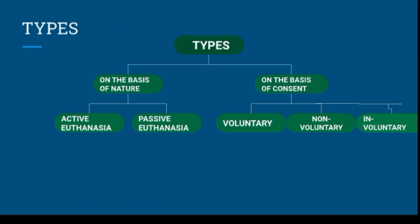Talking about classification on the basis of consent, euthanasia can be classified into three categories: voluntary, involuntary, and non-voluntary. In voluntary euthanasia, the person who is killed has requested to be killed. In non-voluntary euthanasia, the person who is killed has not made a request and has not given consent due to their inability to communicate their wishes, as the person might be in a vegetative state. And in involuntary euthanasia, the person who is killed has made an express wish not to be killed but still is being killed.